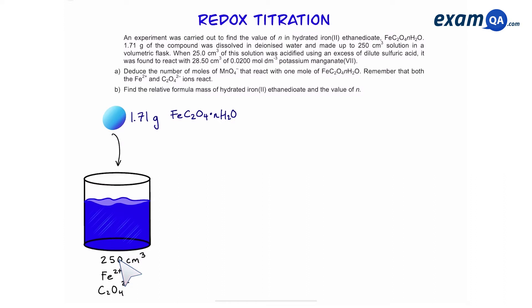Now remember inside this beaker we're going to have two reducing agents: Fe²⁺ and also ethane di-O8 ions.